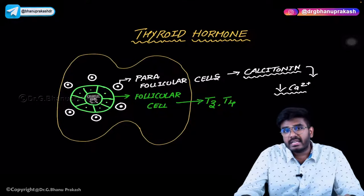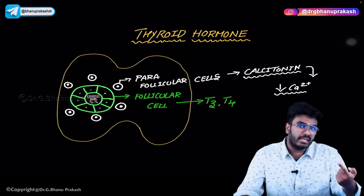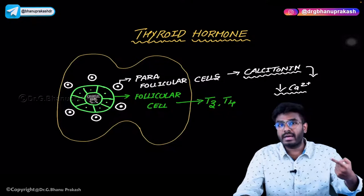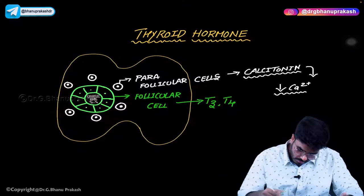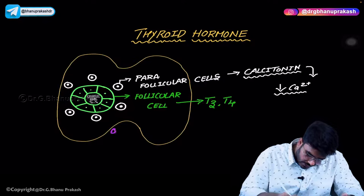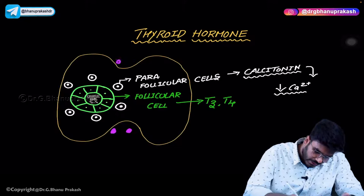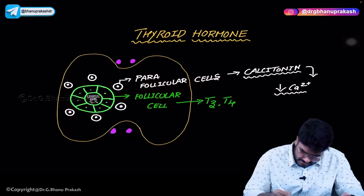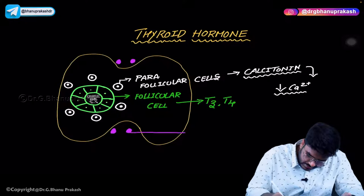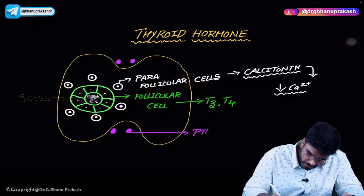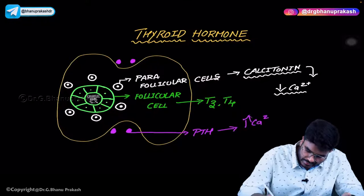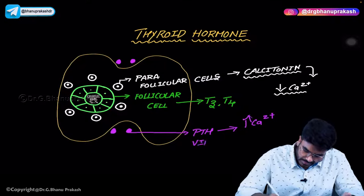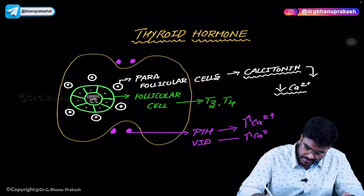Calcitonin decreases blood calcium levels. Who increases blood calcium levels? Blood calcium levels are increased by vitamin D and also by parathyroid hormone. Back to the thyroid gland — there are four parathyroid glands located behind it. These parathyroid glands produce parathyroid hormone, whose function is to increase blood calcium levels. Vitamin D also increases blood calcium levels.